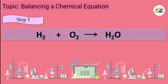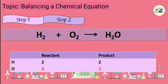Step 2: Compare the number of atoms of each of the elements on left side and right side of the equation. So, we observe that the number of atoms of oxygen is not equal on both the sides.